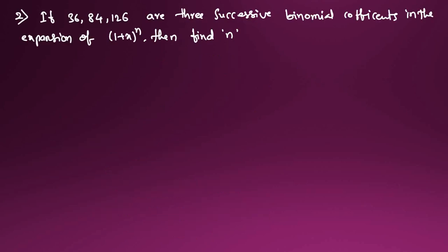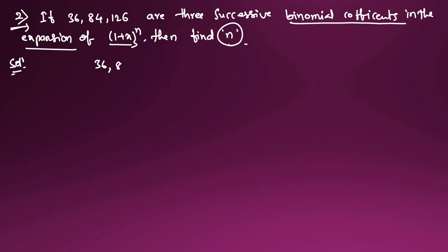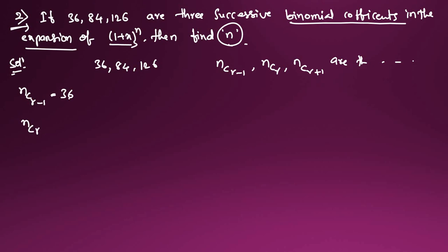Moving to Question 2: given that 36, 84, and 126 are three successive binomial coefficients in the expansion, find n. We let nC(r-1) = 36, nCr = 84, and nC(r+1) = 126.